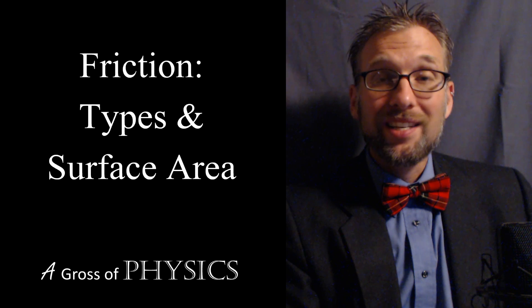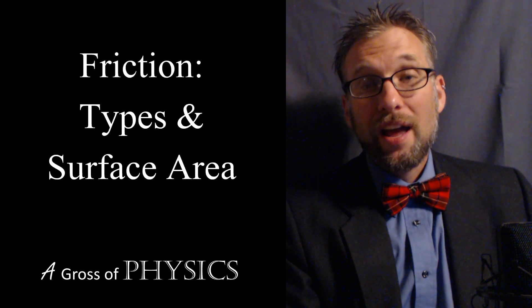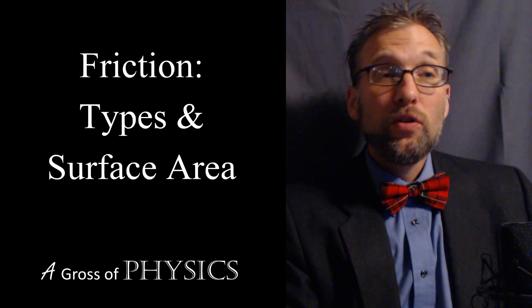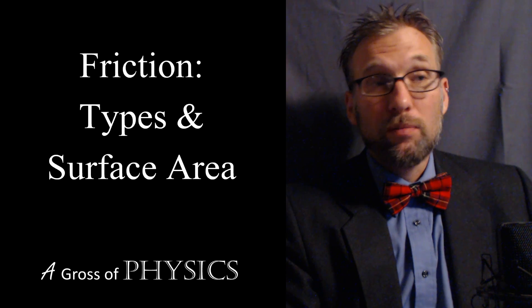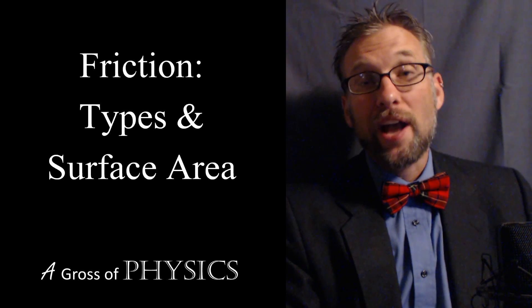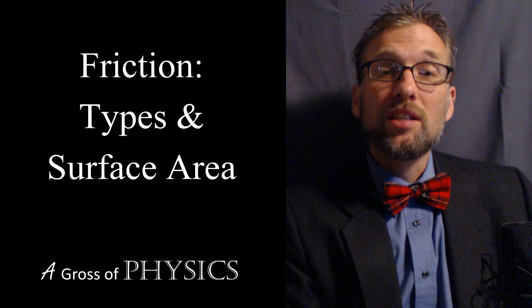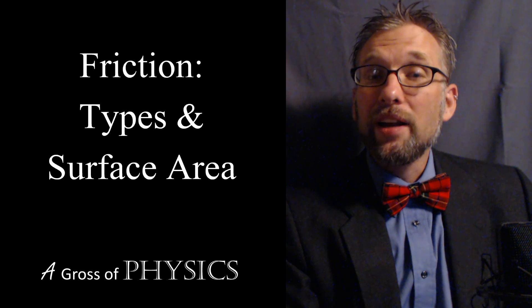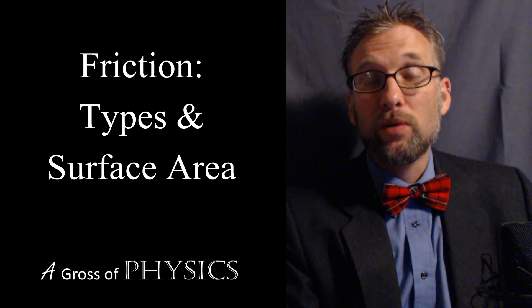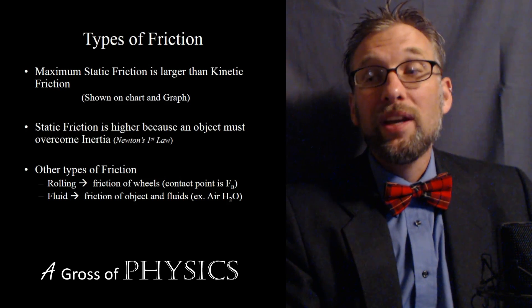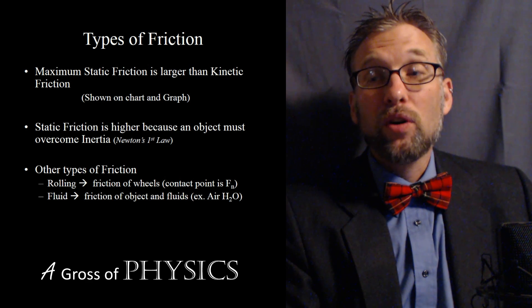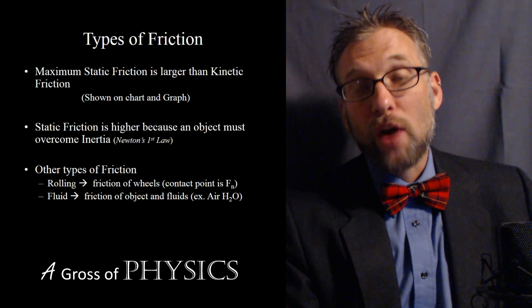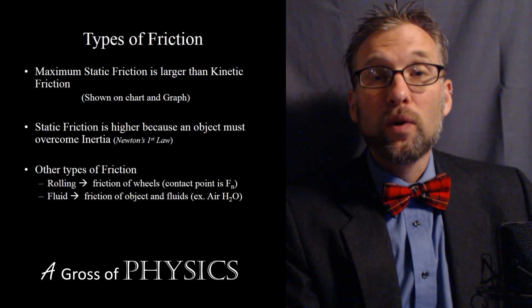Rolling friction is friction that exists between the surface and the point of contact between a wheel. As an object moves, you know that the wheel allows something to move easier than if you slide it or drag it across the floor. One of the main reasons is because you have traction between the wheel and the ground.